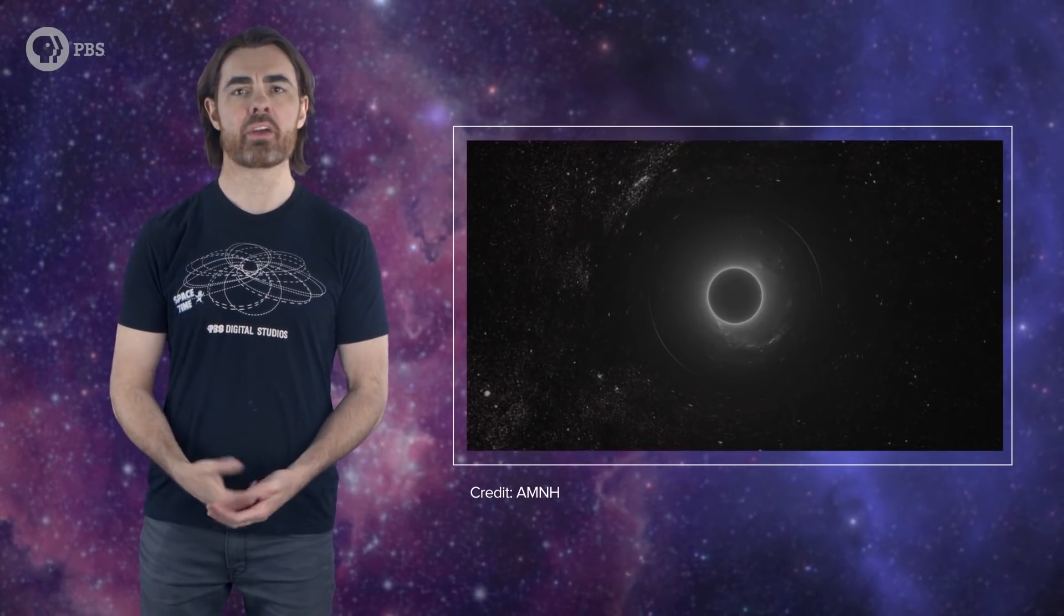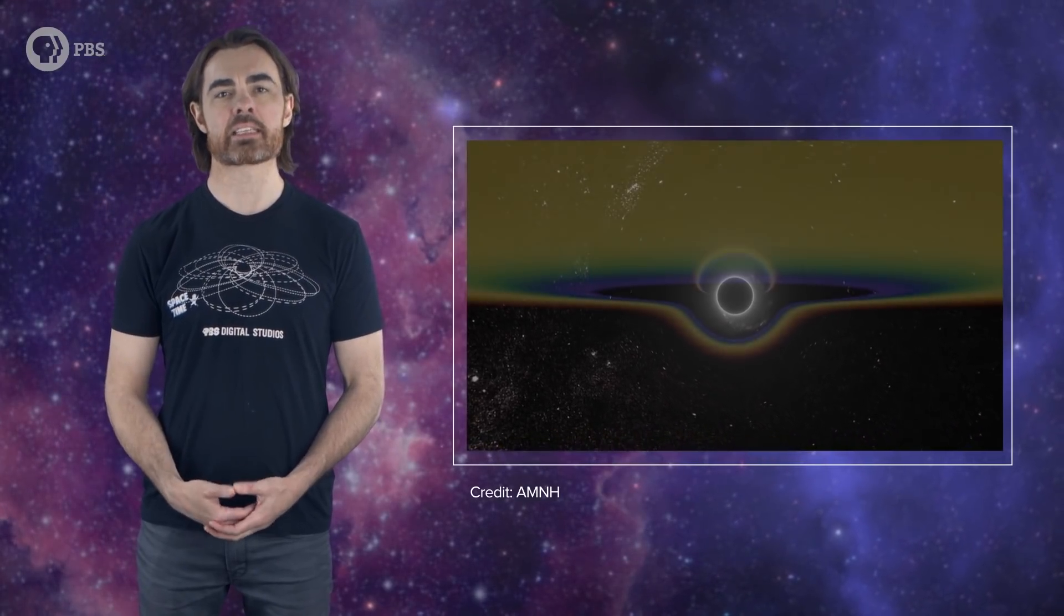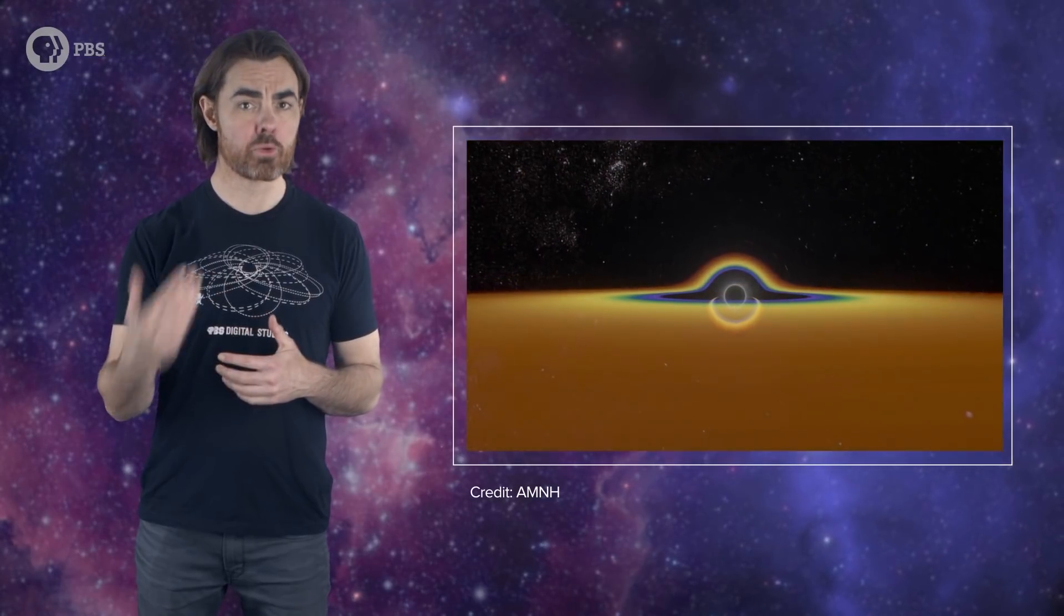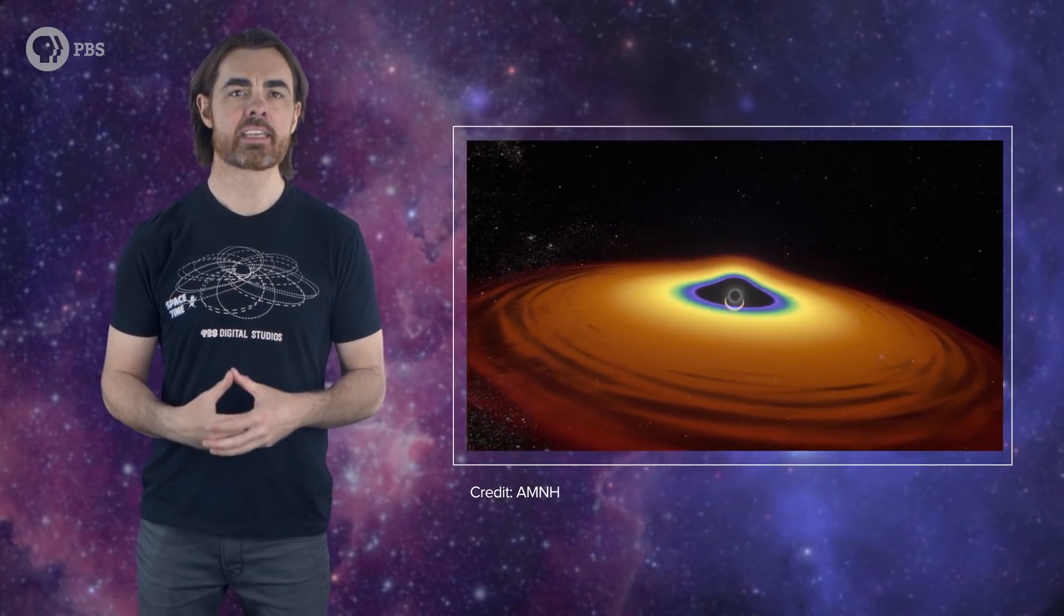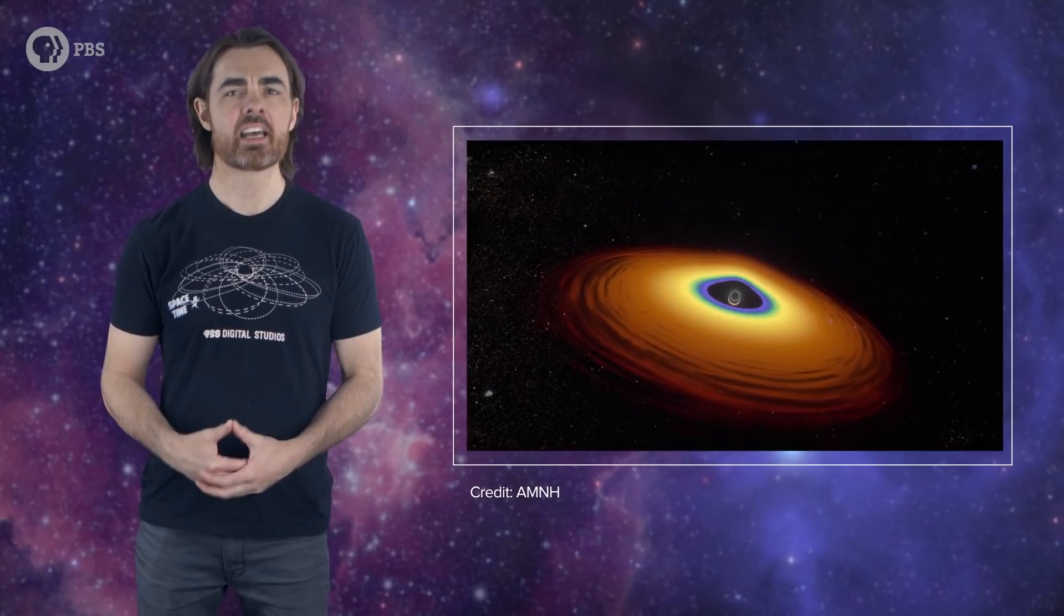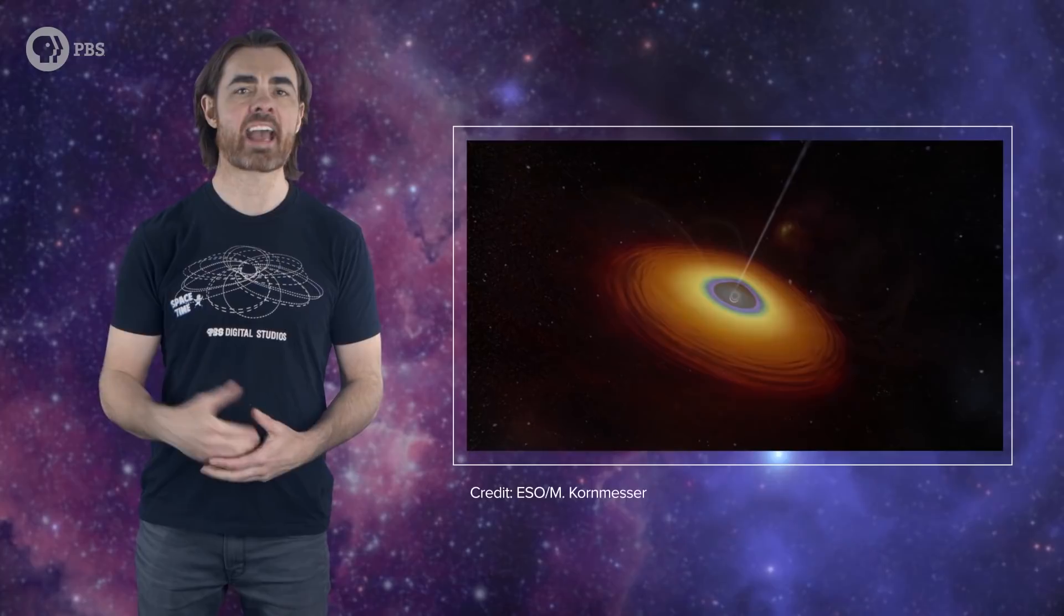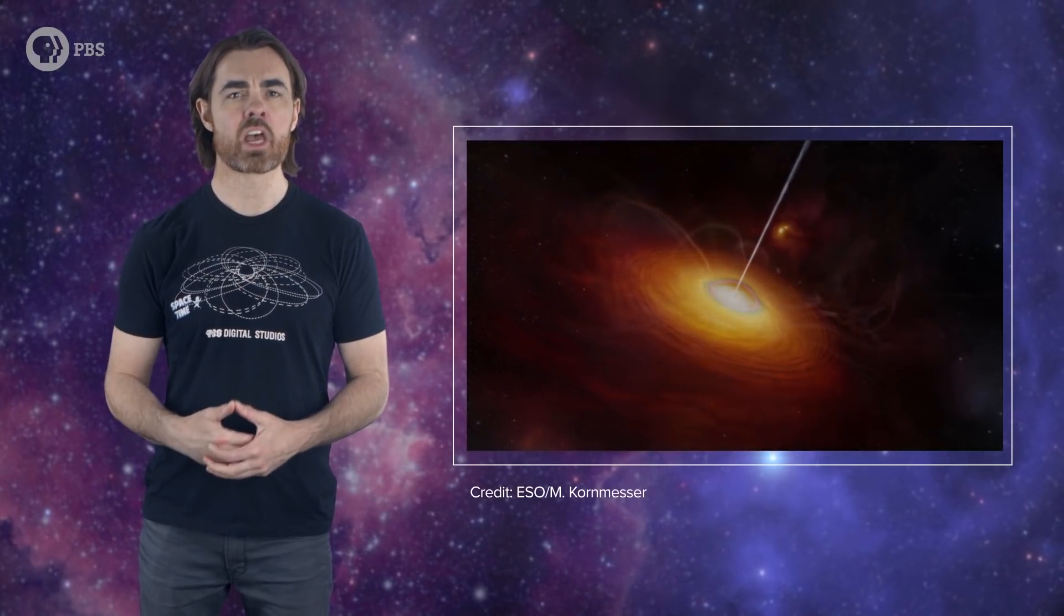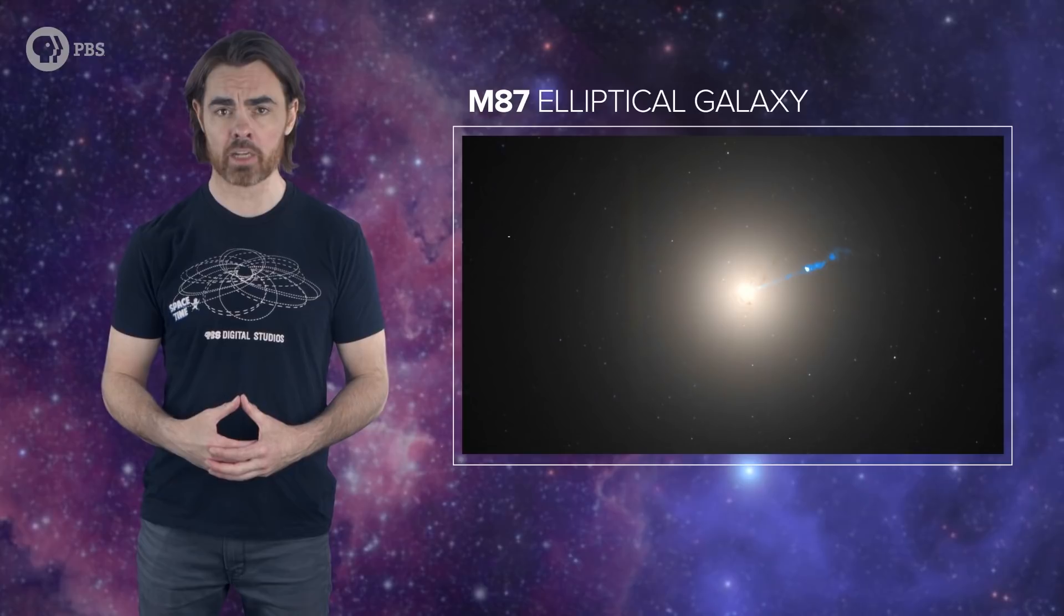So black holes are, of course, black. We see them by their influence on the surrounding space. In this case, it's the energy released by matter falling into the black hole. The supermassive black hole at the heart of the M87 galaxy is currently active. It's currently surrounded by an accretion disk, a whirlpool of gas heated to millions Kelvin that's falling into the black hole. It's also blasting out a jet of energetic particles channeled by the intense magnetic fields around the black hole. We see that jet extending 5,000 light-years outside the galaxy.